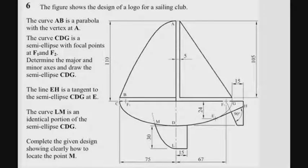Having done that, curve AB is a parabola with the vertex at A. What is the height of this parabola? The width of this span is 75. So let's develop parabola AB now.